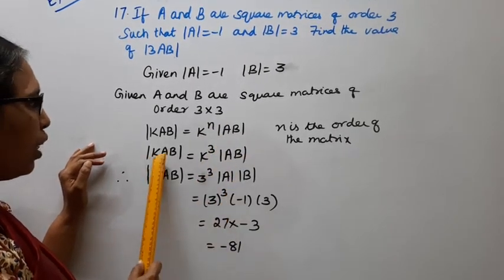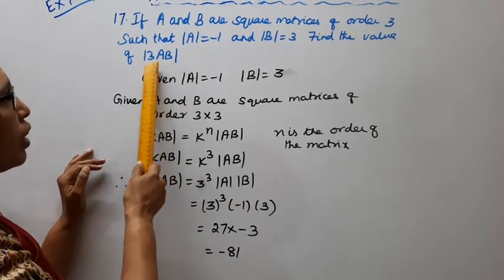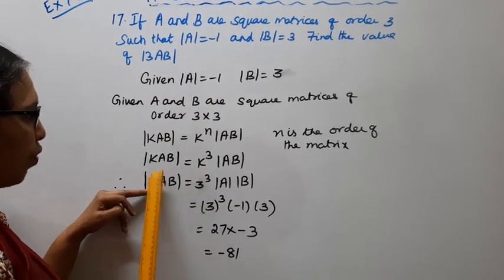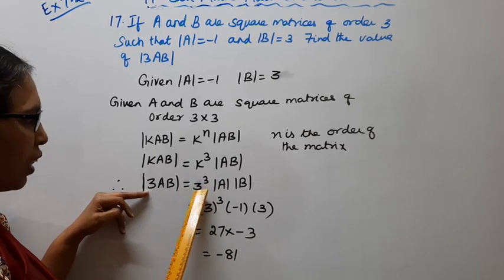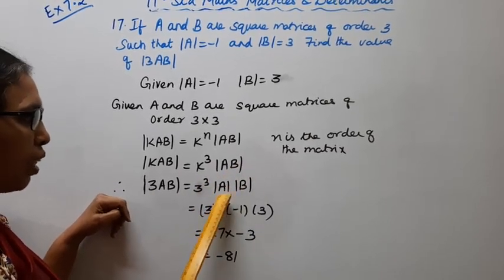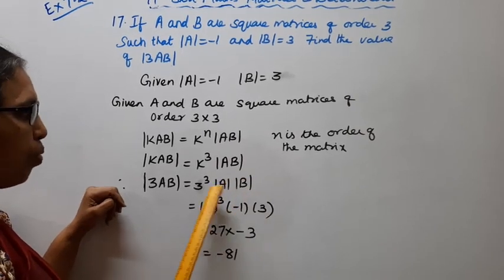Determinant of kAB equal to k power n into determinant of AB. Now we need to know determinant of 3AB. Instead of k, we substitute 3 power 3, determinant of AB, determinant of A, determinant of B.